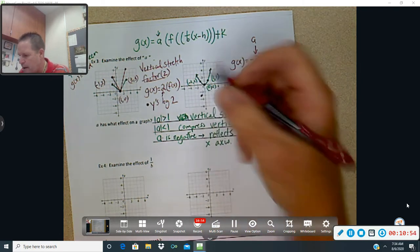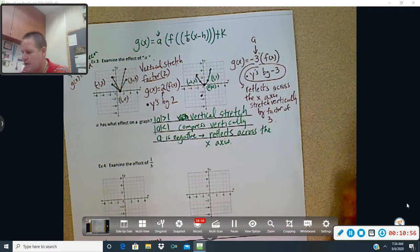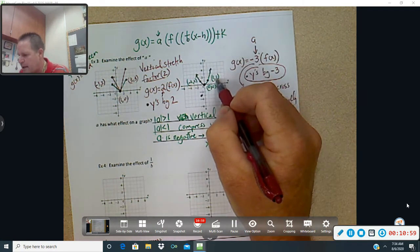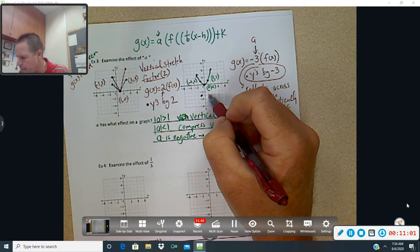0, 0. If I multiply y by negative 3, nothing changes there. And 1, comma, 1. If I multiply by negative 3, it becomes 1, comma, negative 3.